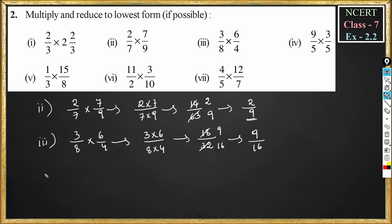Now problem number 4: 9 by 5 multiplied by 3 by 5. Numerator into numerator is 9 into 3, denominator into denominator is 5 into 5. This becomes 9 into 3 is 27, divided by 5 into 5 is 25. So the answer is 27 by 25.